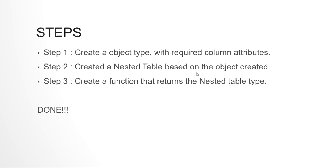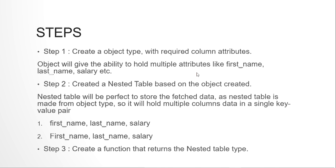Why we are doing it like this: first of all, we need an object because we want multiple values to be returned — say, first name, last name and salary. To hold more than one value for an employee, we create an object with these three attributes and then create a nested table of this object. The nested table will store first name, last name, salary at position 1, and again first name, last name, salary at position 2 — multiple indexes, each holding three values. Then we create a function that selects and returns this particular nested type.